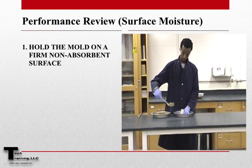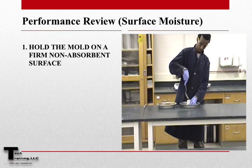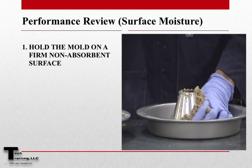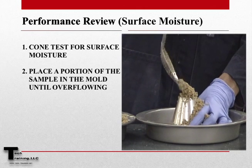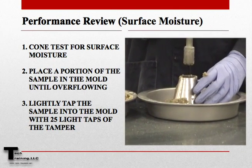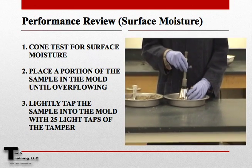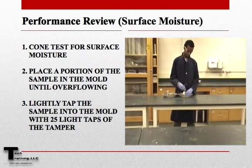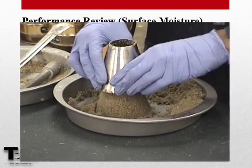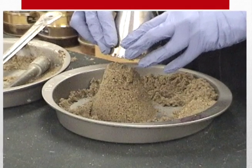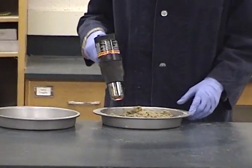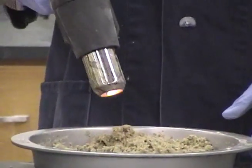To perform the surface moisture test, there should be some surface moisture present in the sample. Hold the mold on a firm, non-absorbent surface. Then fill the cone with the sample until it is overflowing. Holding the 340-gram tamper about 5 mm above the top of the sample, drop the tamper onto the sample 25 times. Then lift the mold vertically. If the sample retains its molded position, it can be assumed that surface moisture is still present. Tumbling, stirring, or providing a warm stream of air is permissible to speed up the drying process.